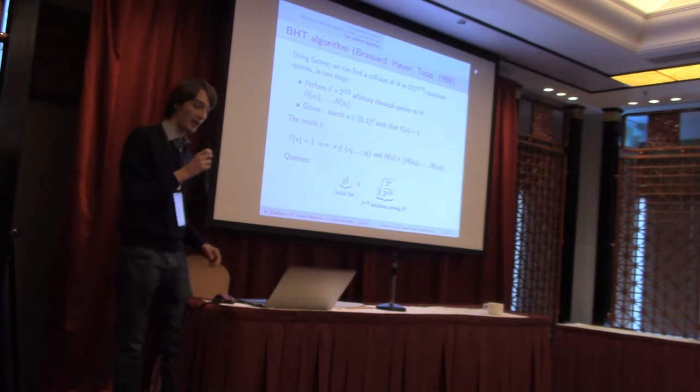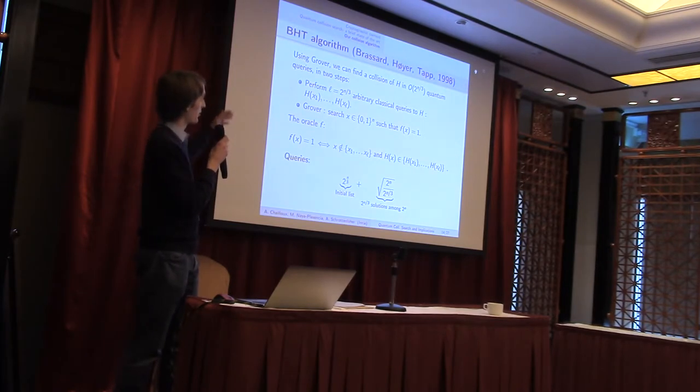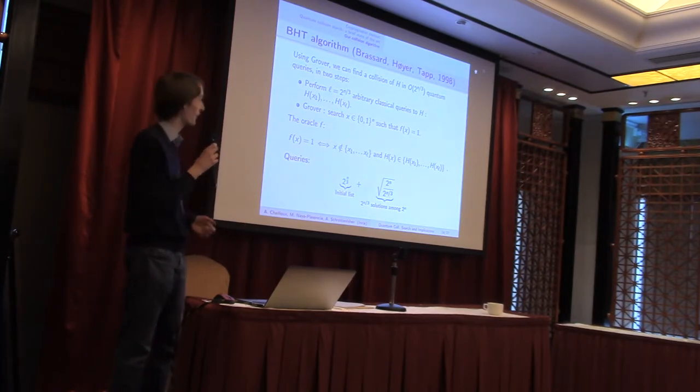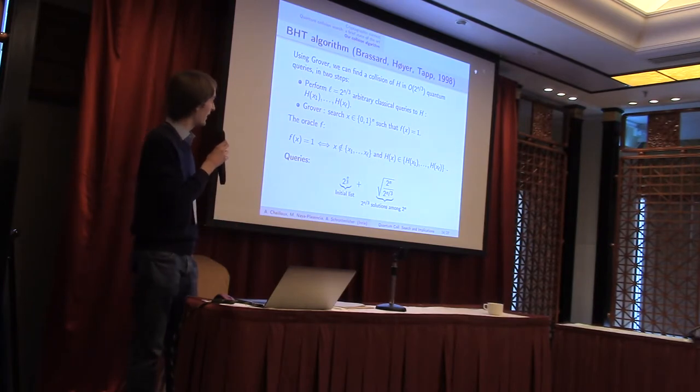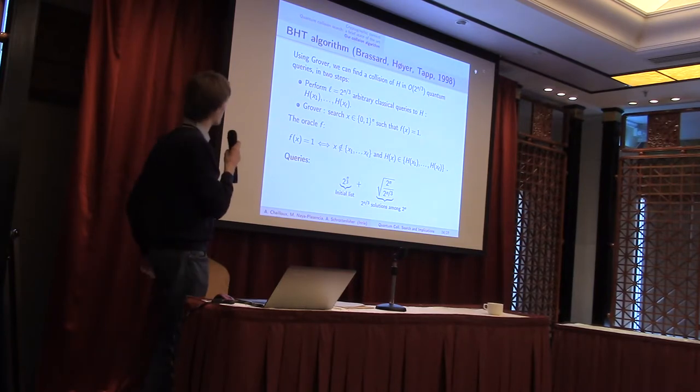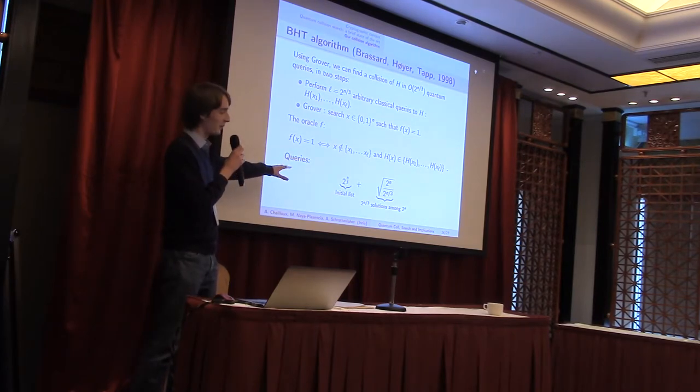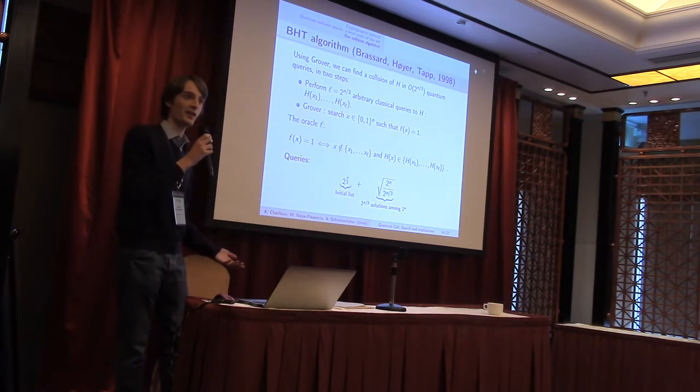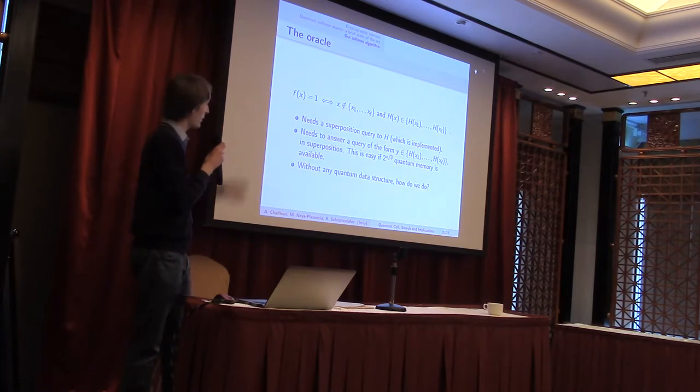Grover is used as a subroutine in Brassard and Tapp's algorithm in 1998. And this works in two steps, as shown in the slide. First, we need to perform a number of arbitrary classical queries to the function h. And then, we need to search for a collision on one of these queries. The oracle for good states is there. It tells, basically, whether we found a collision. And the number of queries is 2 to the n over 3 for the initial list, for the first step. And the second step, since we have 2 to the n over 3 solutions, we have the same number of queries. So, everything is fine from this point of view.